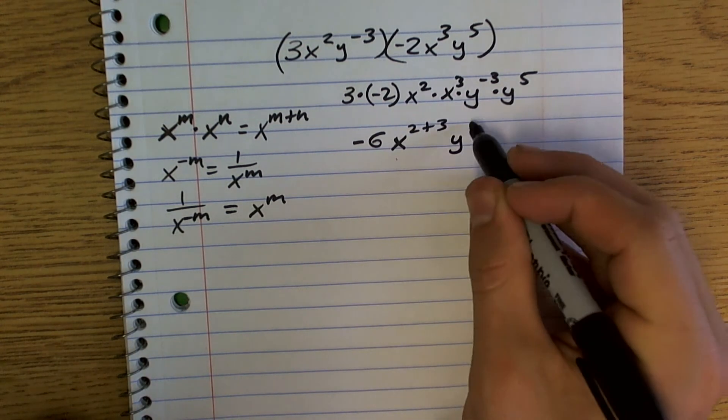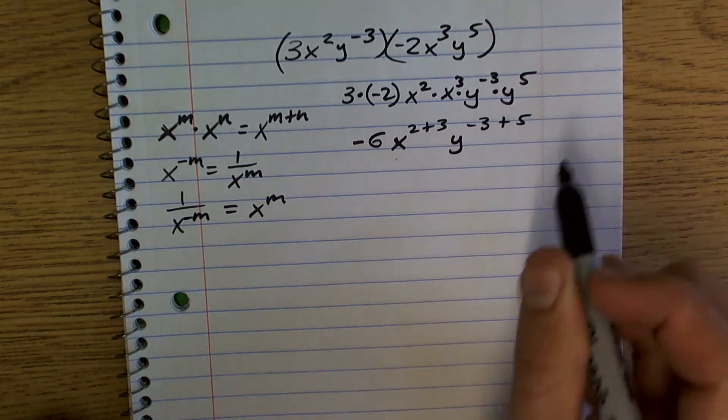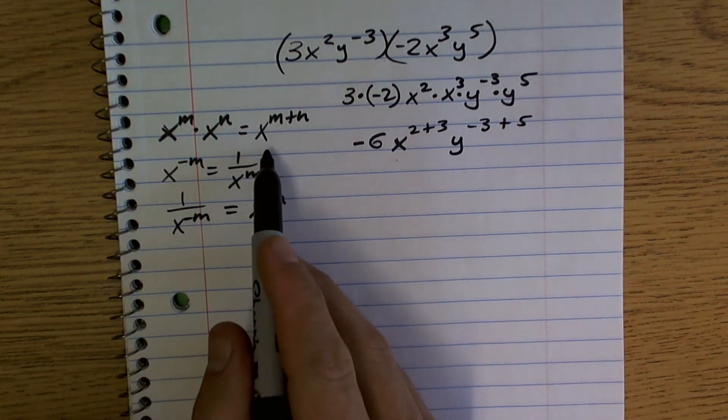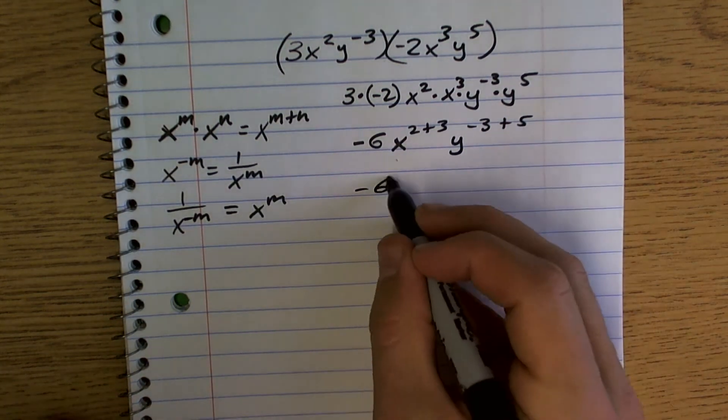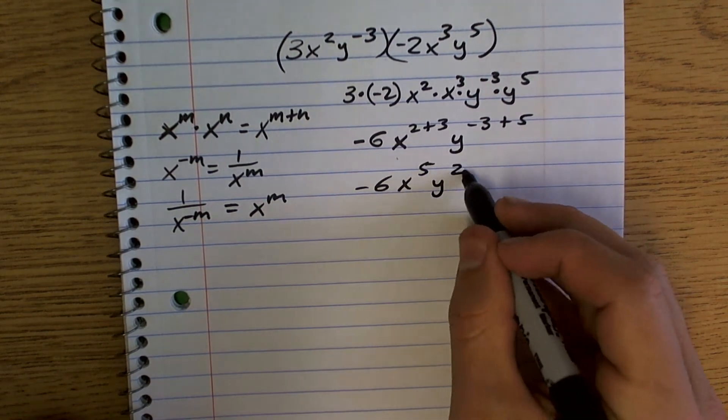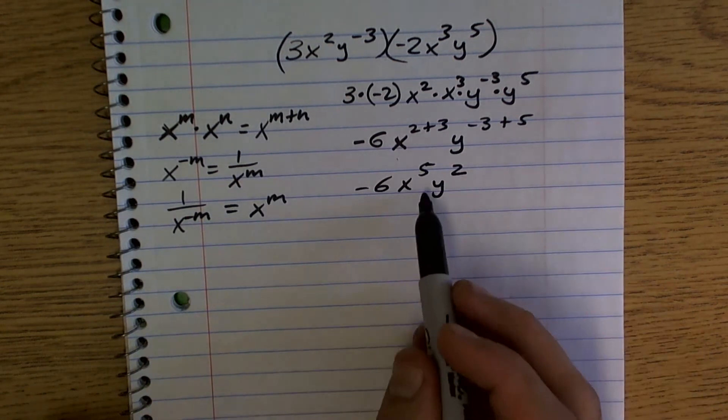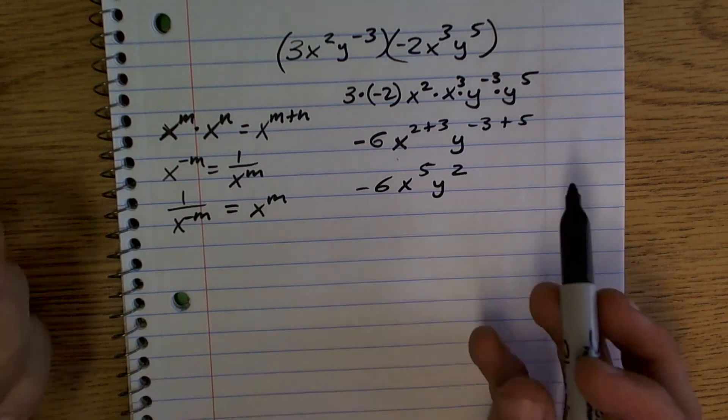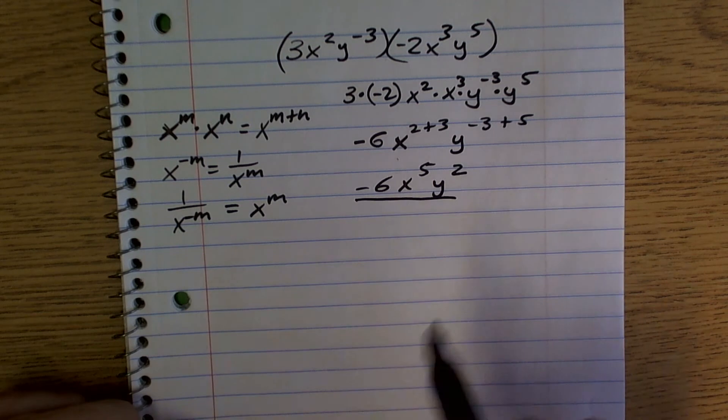And this is going to give me y to the negative 3 plus 5. Just following this rule of exponents, right? So I get negative 6, x to the fifth, y to the second power. And since they both have positive exponents, I'm all good. And that's it.